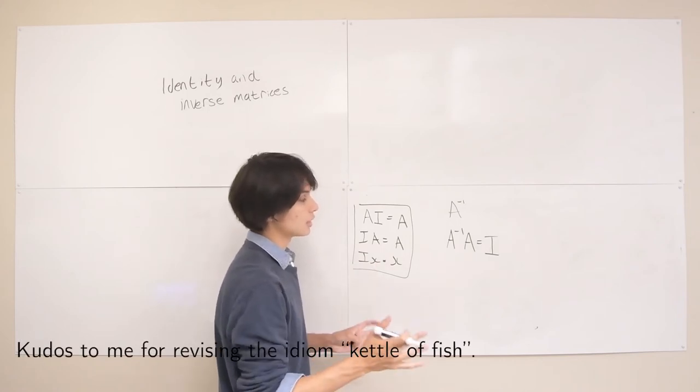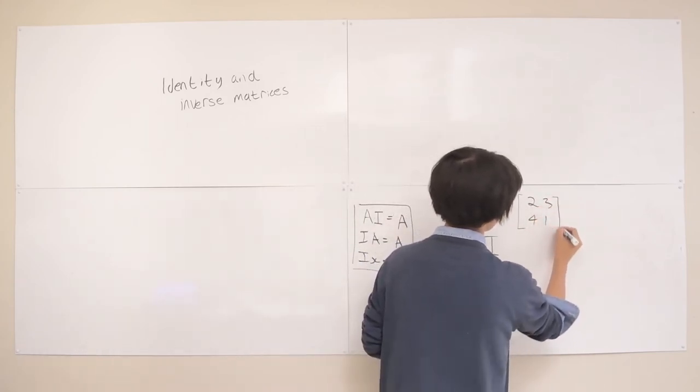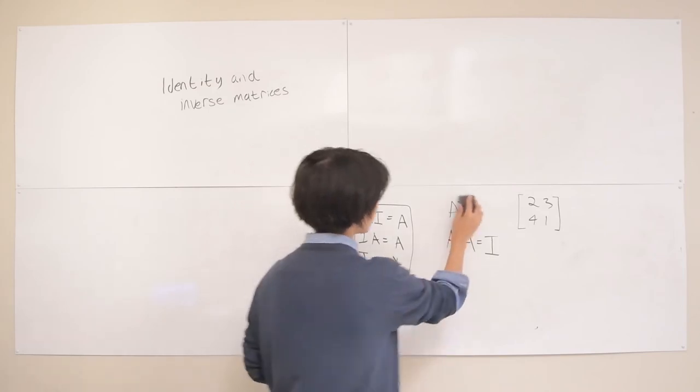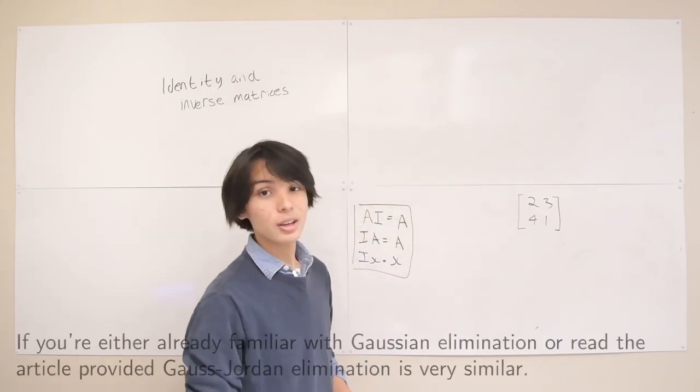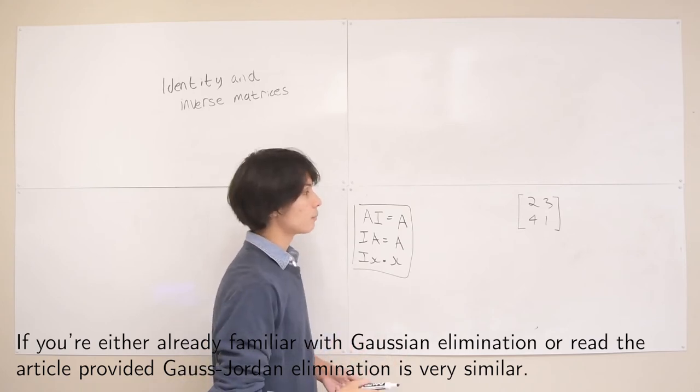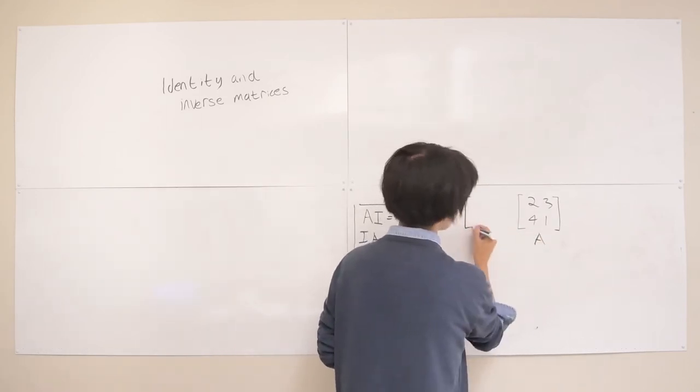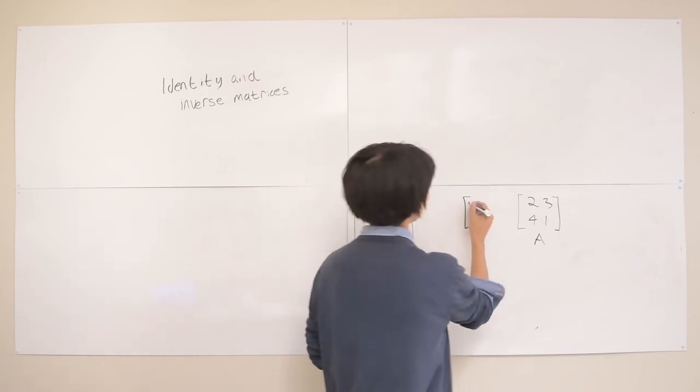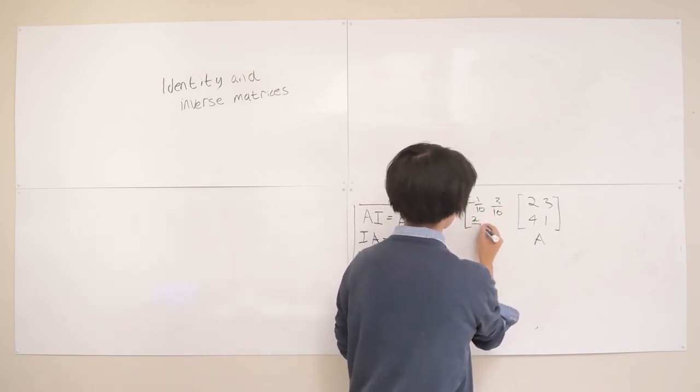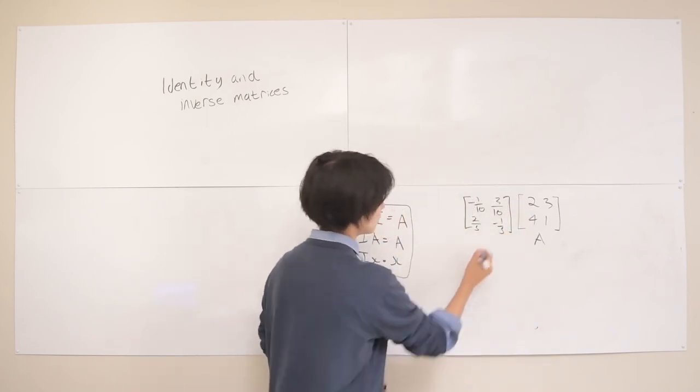But let's just do a single example. So let's say we have the matrix 2, 3, 4, 1 again. And I calculated this inverse using software, and there are ways you can calculate inverses by hand, but that uses another thing called Gauss-Jordan elimination, which requires some other topics that we don't really need to talk about here. But I was able to get the inverse of this matrix using software. So this is A. And then the inverse of this matrix is negative 1 over 10, 3 over 10, 2 over 5, negative 1 over 5. So that's the inverse of this. So that's A negative 1.